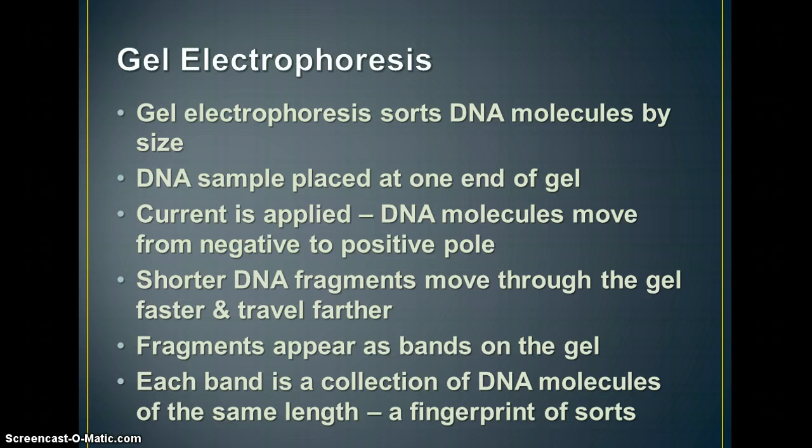The DNA molecule pieces that are shorter are going to move through the gel faster and they're going to travel farther in the amount of time that you let the electricity run. The larger ones will get stuck in the gel and not be able to travel as far or as quickly. And so what you're going to end up with is the fragments showing up as bands on the gel. Each of those bands is a collection of DNA molecules of the same length. And that makes the fingerprint, the DNA fingerprint that you see pictures of on TV a lot of times.